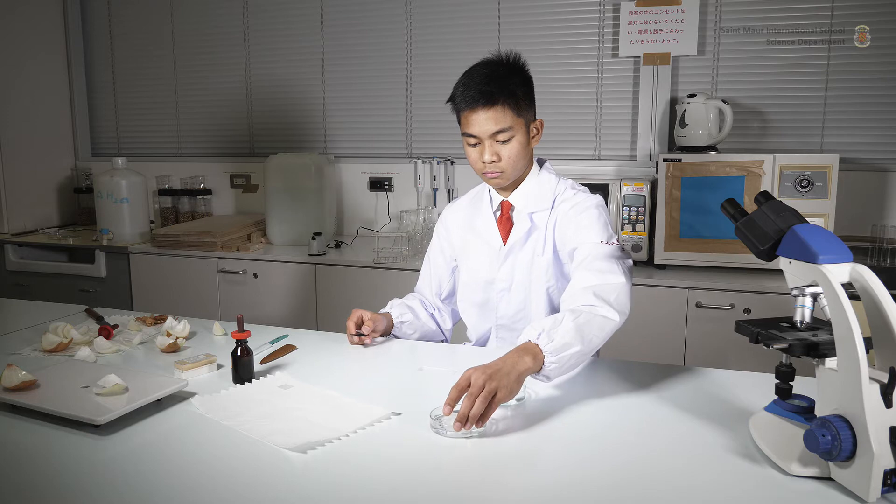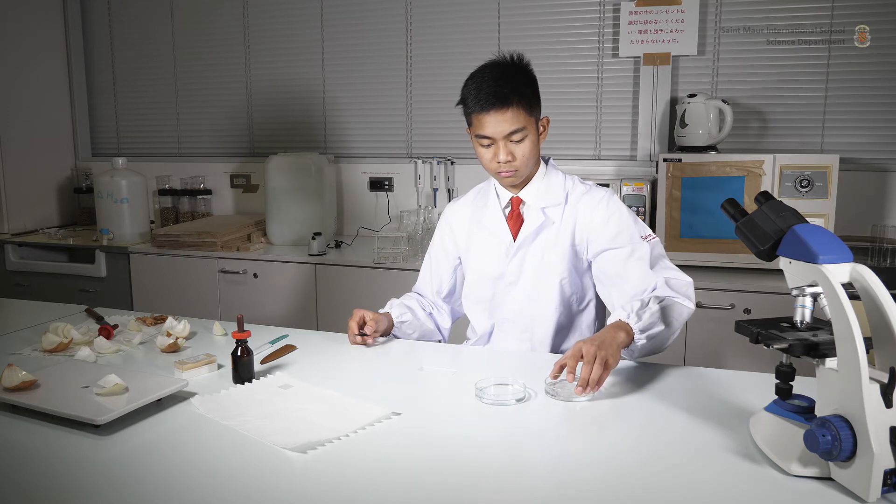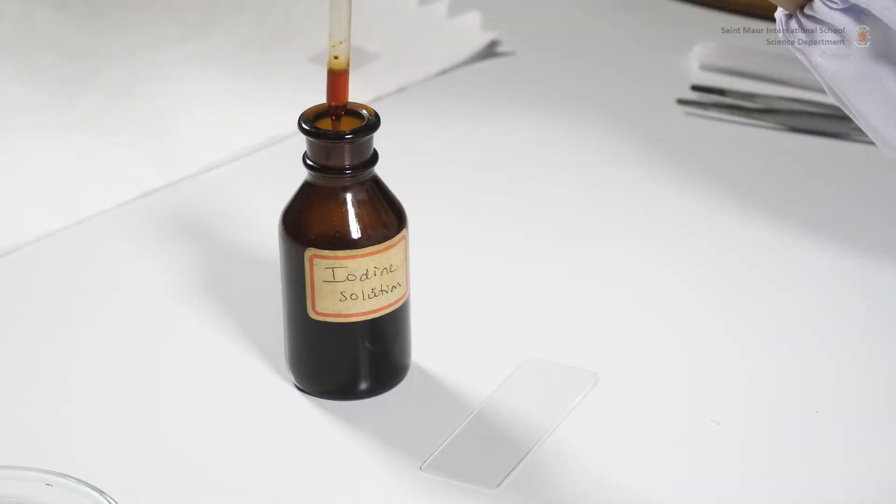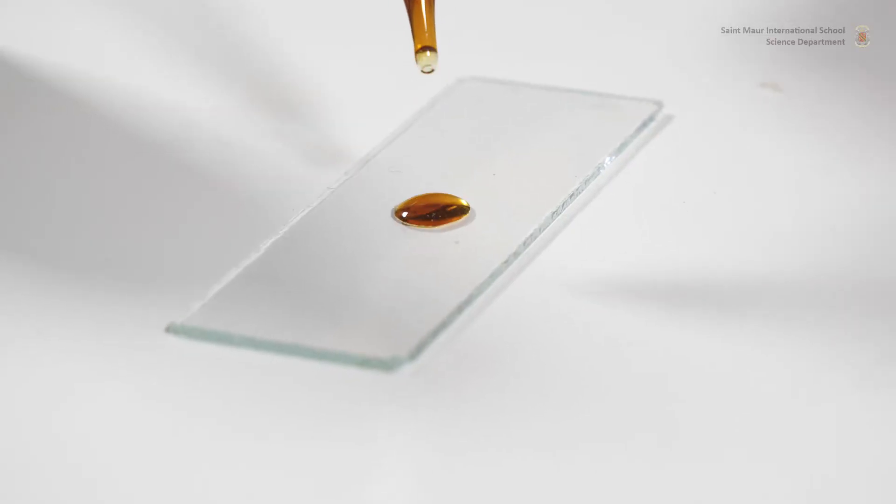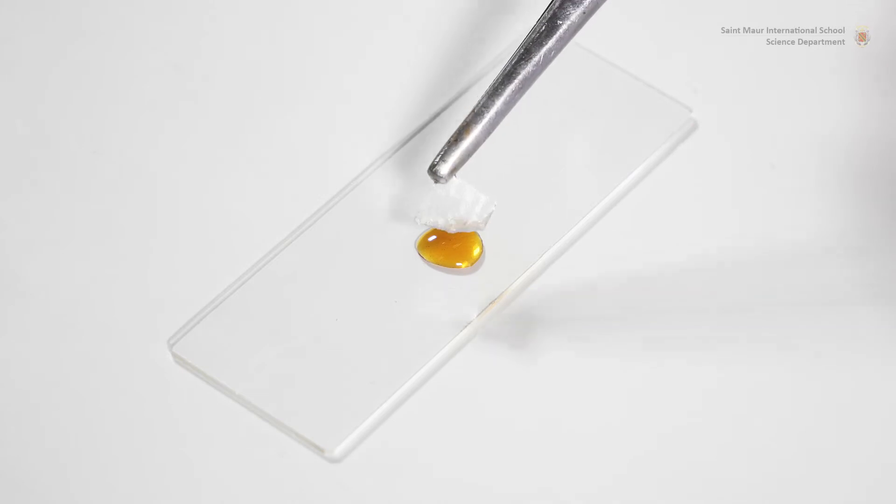Mount one section between a slide and a cover slip. To enhance the contrast, use iodine instead of water. Iodine will stain starch and become darker as it gets concentrated when the cells lose water.